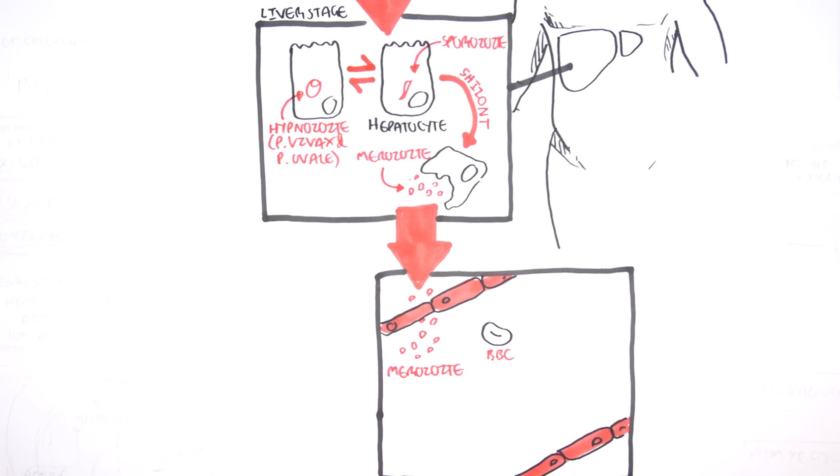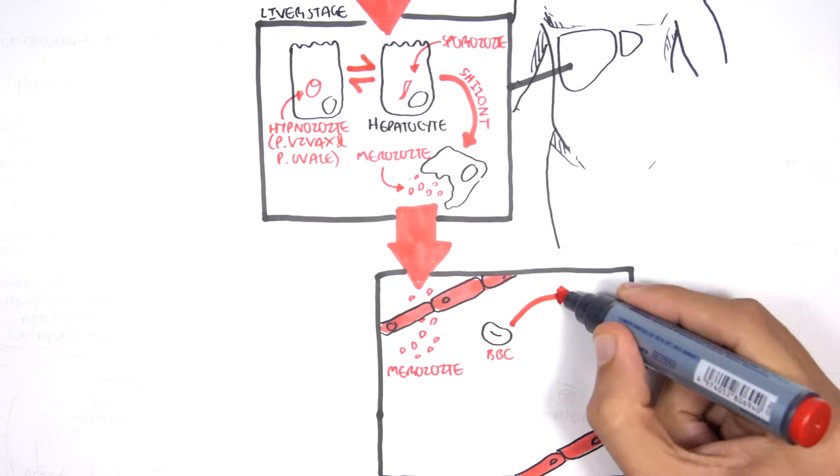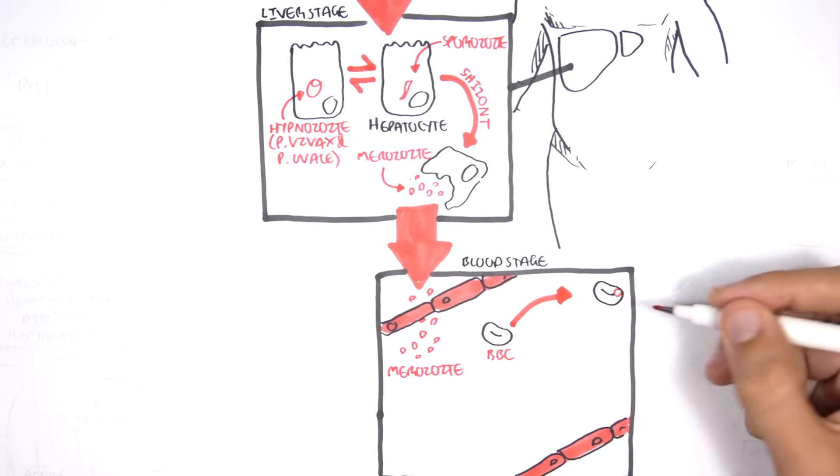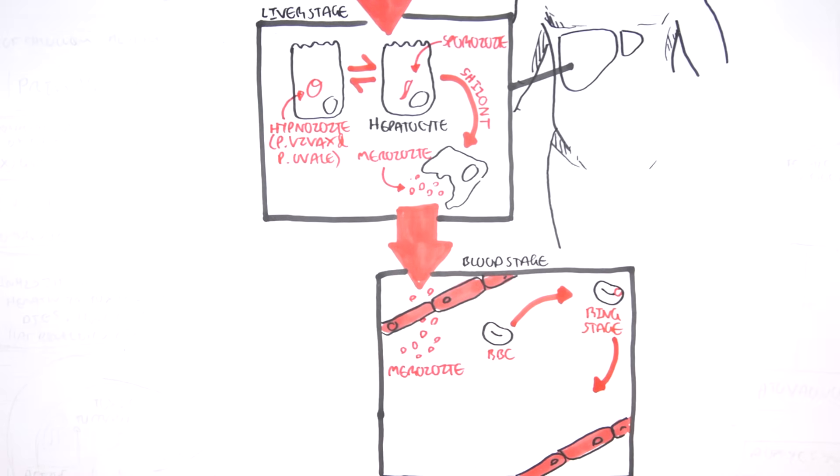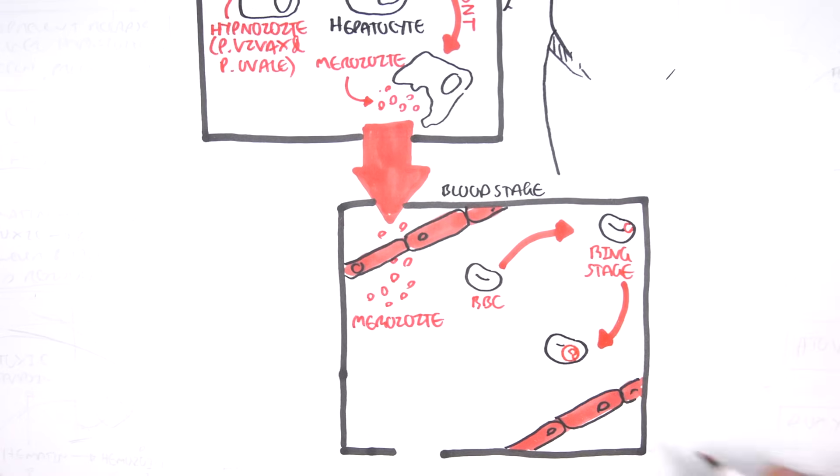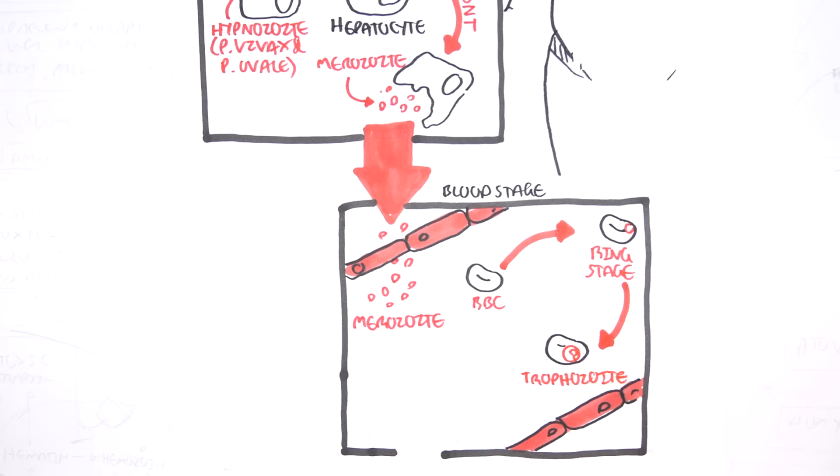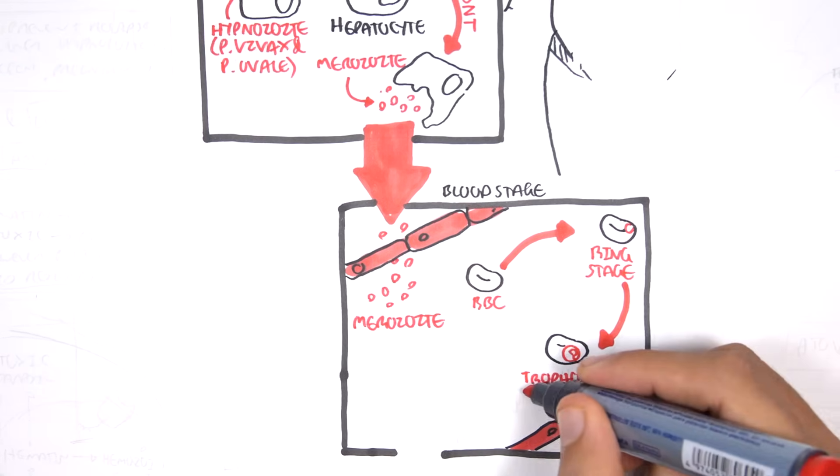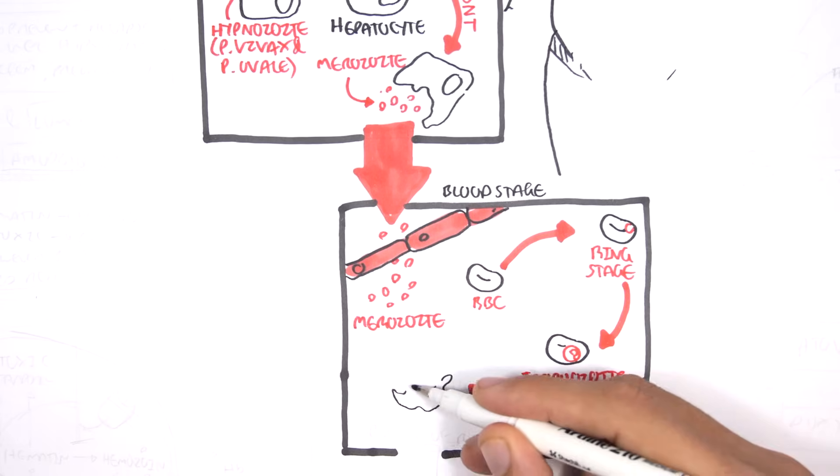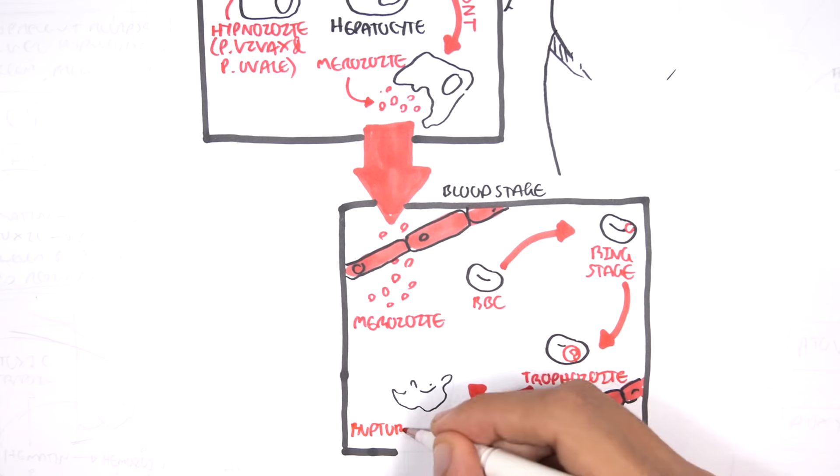Now let's go back to the merozoites, which are in circulation. The merozoites invade red blood cells. Within the red blood cells, it enters the ring stage. It will then replicate to form a trophozoite and mature to become a schizont before rupturing, releasing again many merozoites. This cycle can then continue.